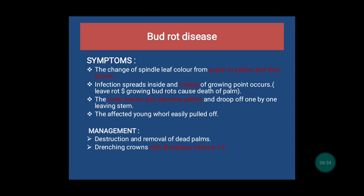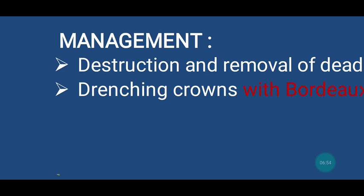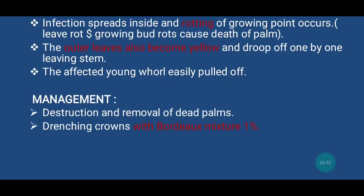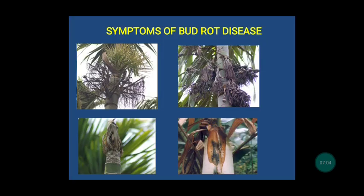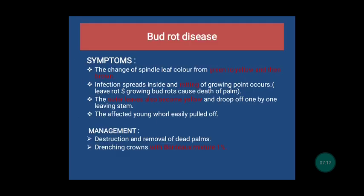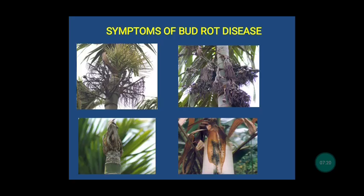The infection spreads inside and rotting occurs, leading to the death of the palm. Another symptom is that the outer leaves become yellow and droop, and the affected bud easily gets pulled off. The remedy measures include destruction and removal of dead palms, and drenching crowns with Bordeaux mixture of 1%. The picture shows the symptoms of bud rot disease: the first one shows the changing of the spindle from green to yellow, the second shows rotting of leaves, the third shows the picture of bud rot, and the last shows yellowing of outer leaves.